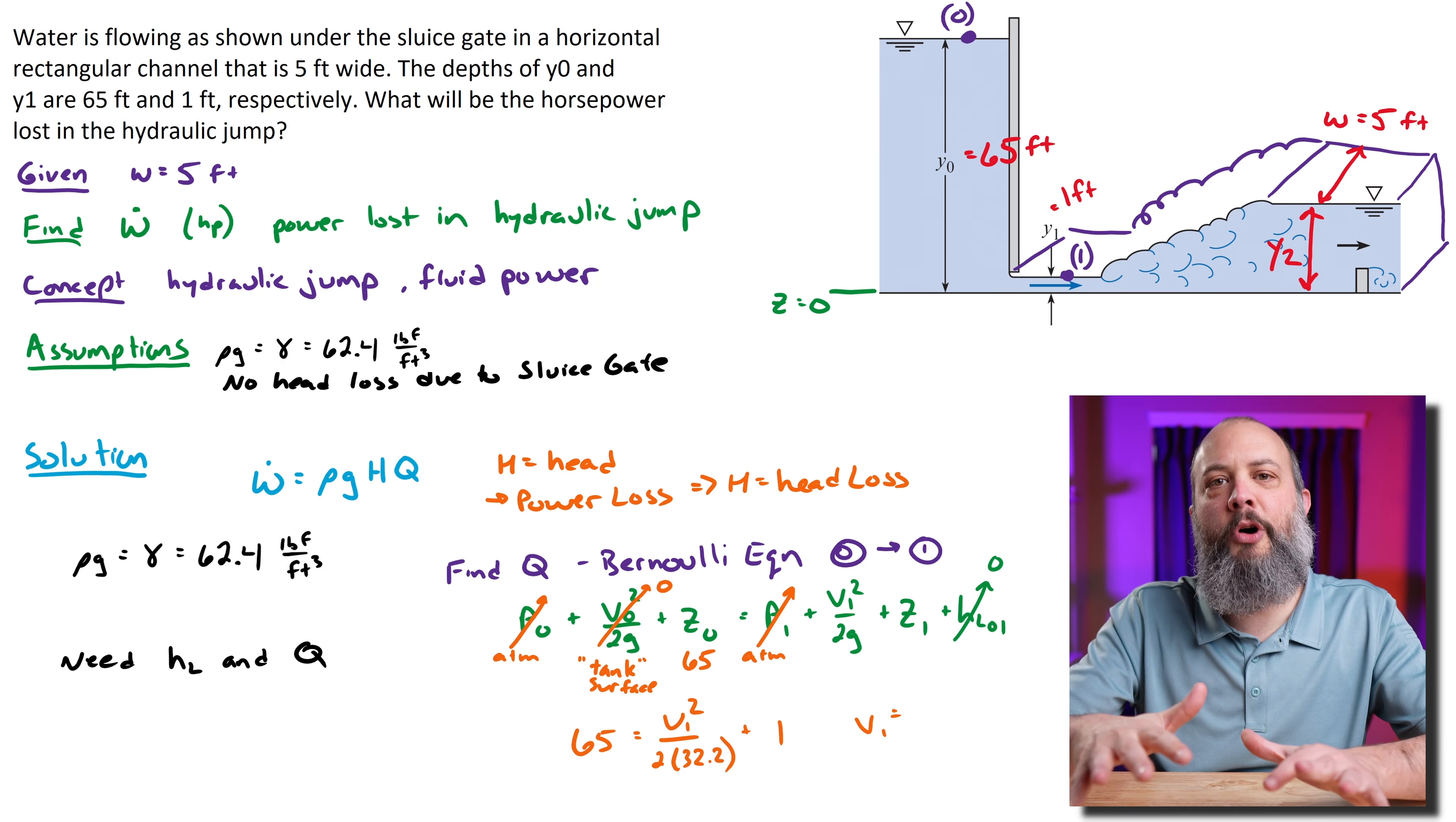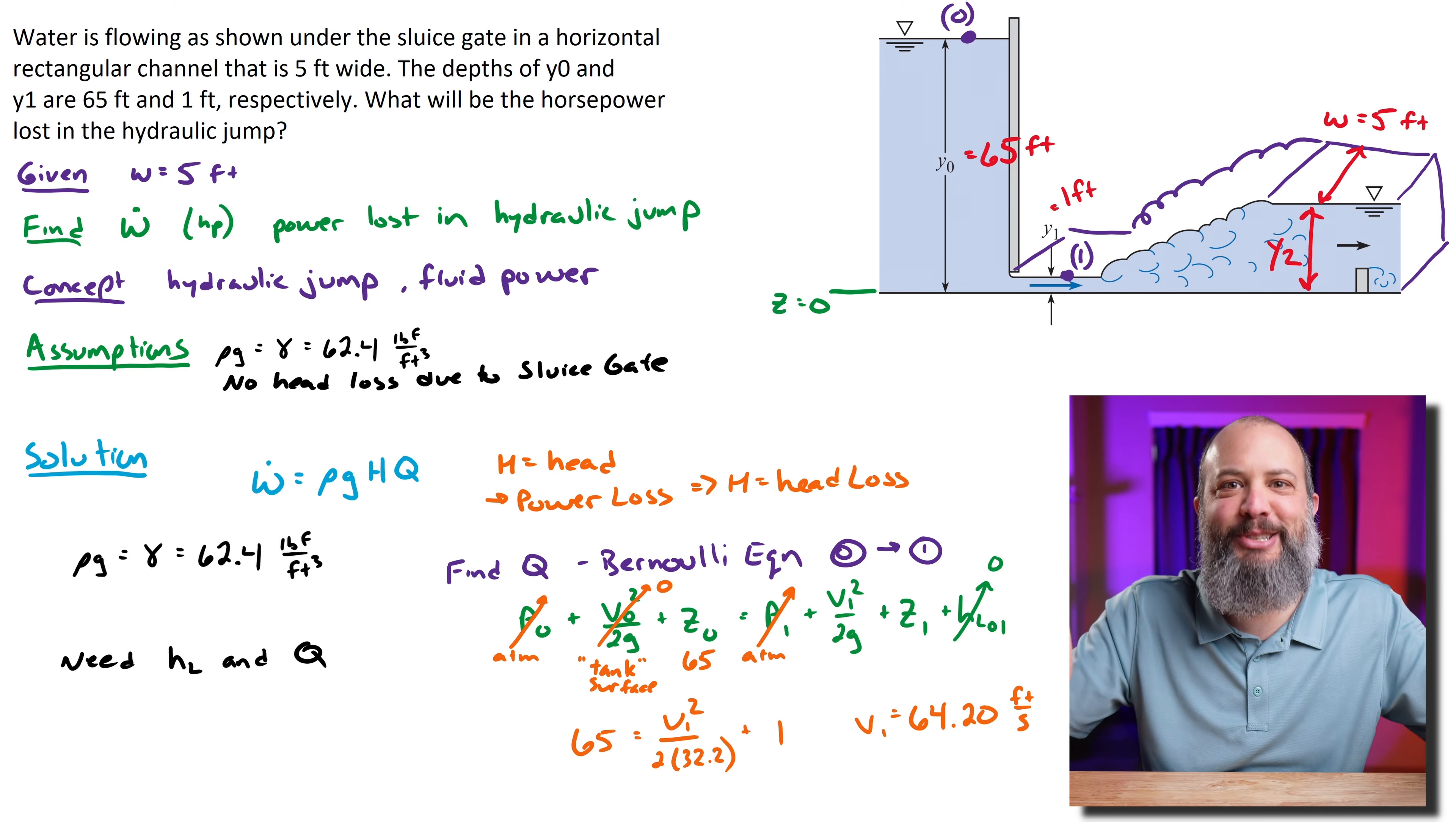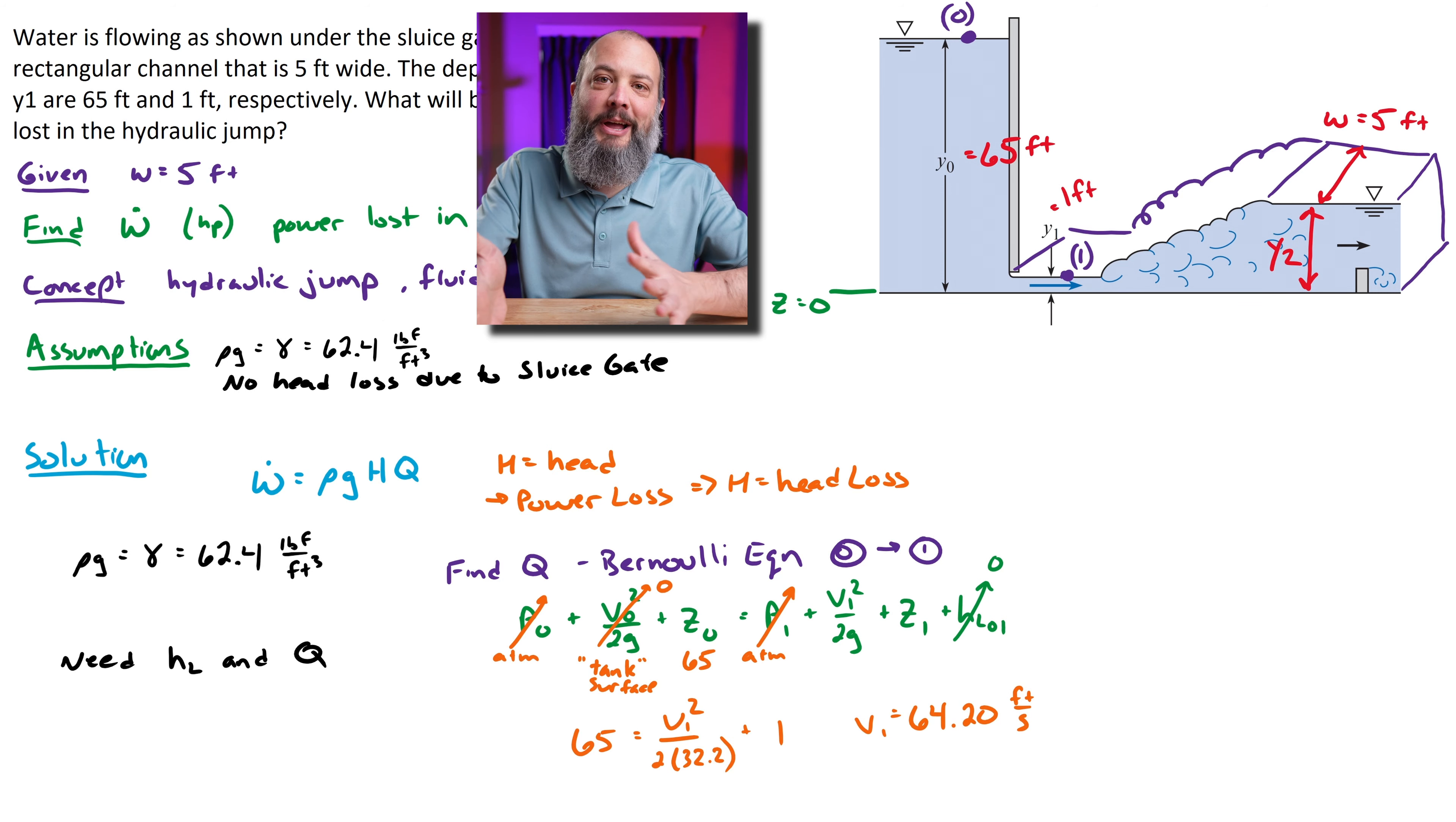A little algebra gives me 64.2 feet per second as the velocity of the water in that thin one-foot tall water as it exits the sluice gate. Volumetric flow rate is v times A, so I can multiply this 64.2 times the cross-sectional area. We're given that the channel is 5 feet wide and it's 1 foot deep, so that's a 5 square foot cross-sectional area. Multiply by 64.2 and that's 321 cubic feet per second.